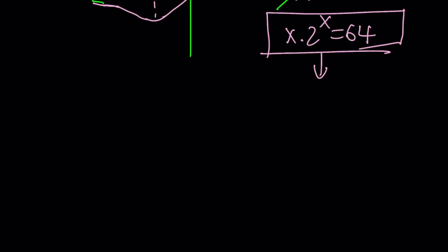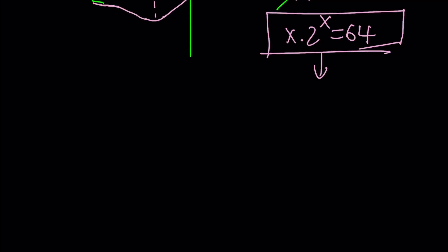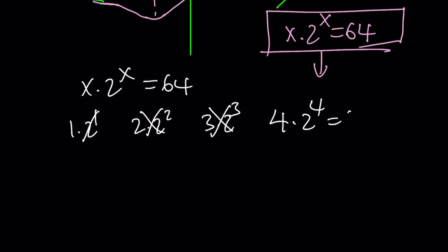Well, I'm just going to use trial and error, which sometimes is a good strategy. Suppose x = 1. 1·2^1 doesn't work. 2·2^2 doesn't work. 3·2^3. 3·8 doesn't work. Not quite there. 4·2^4 is 4·16, and we get a solution from here. Yay! So x = 4 is a solution, and that is actually the only solution for this equation.